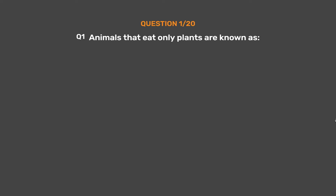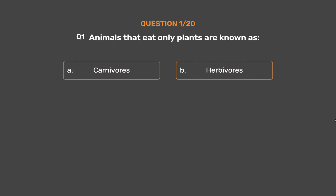Question number 1. Animals that eat only plants are known as: Option A, Carnivores. Option B, Herbivores. Option C, Omnivores. Option D, Parasites.